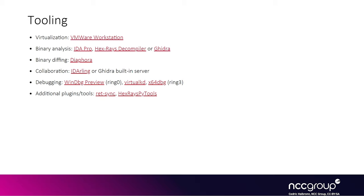We will use Ghidra to reverse engineer the Windows binaries, or alternatively you can use IDA Pro. Then we'll use WinDBG Preview to debug the target VM from the debugger VM. And we will use RedSync, which is a plugin both in Ghidra and WinDBG, in order to synchronize the disassembler and the debugger.